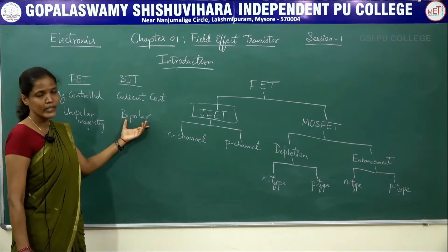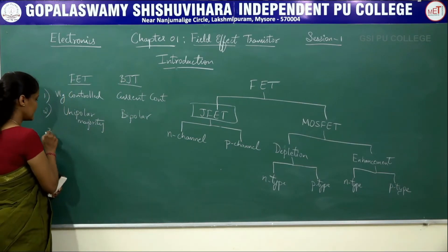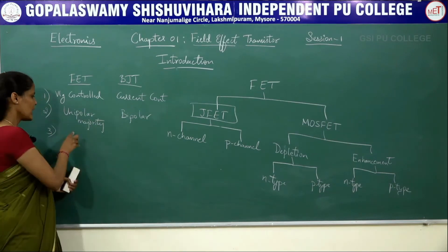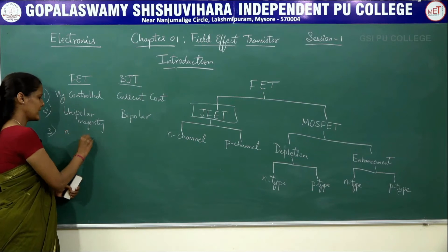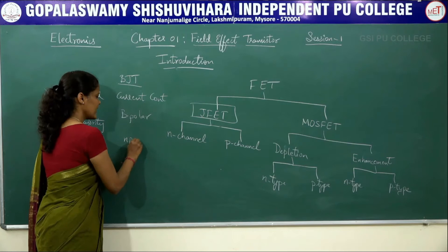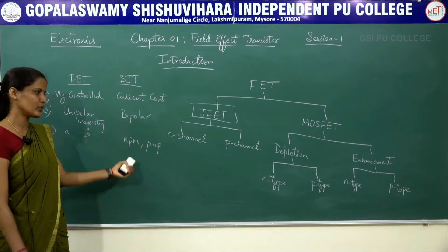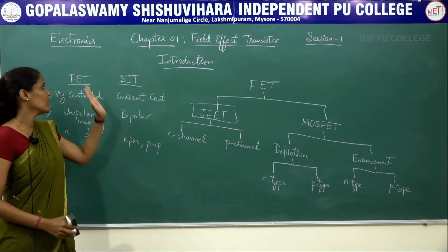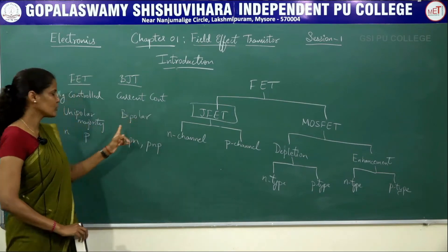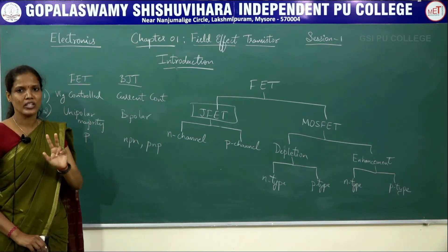In BJT, both majority charge carriers as well as minority charge carriers are responsible for the current conduction. Coming to the third difference: FET are of two types, that is N channel and P channel. Here, BJT or transistors are also of two types: NPN transistor and PNP transistor.